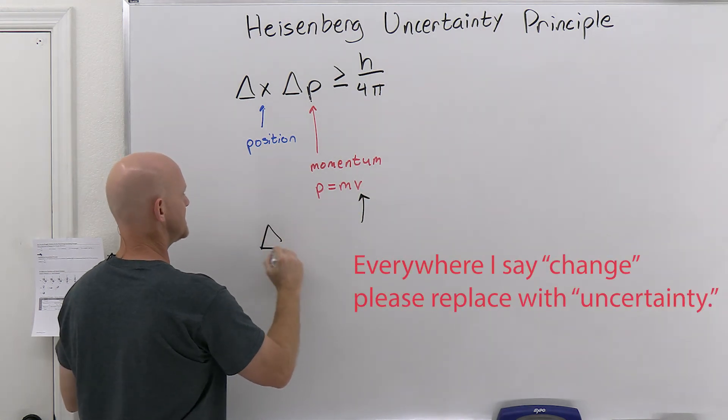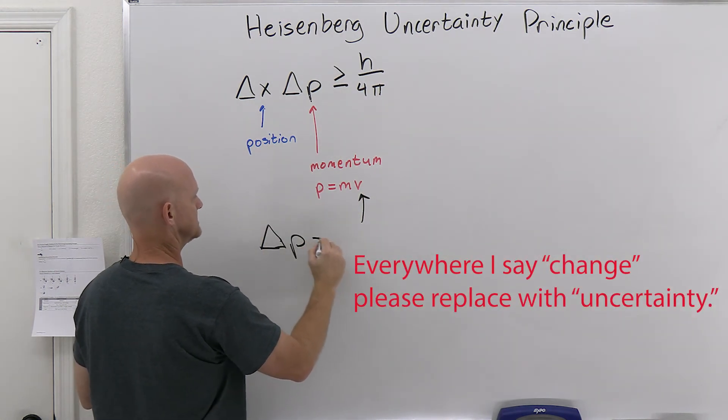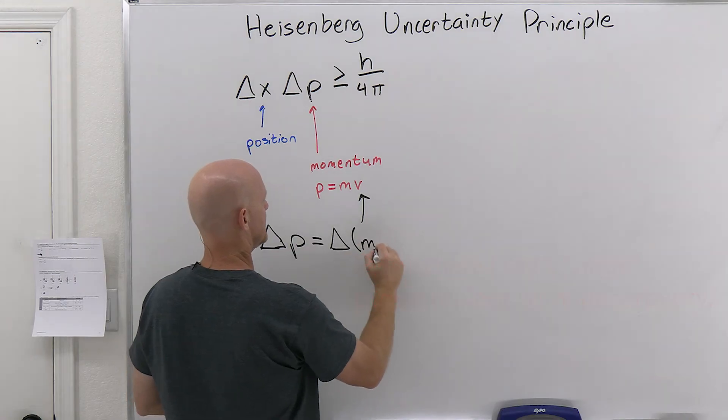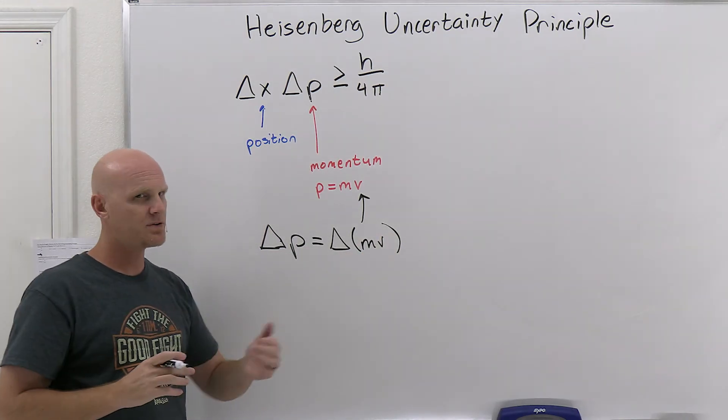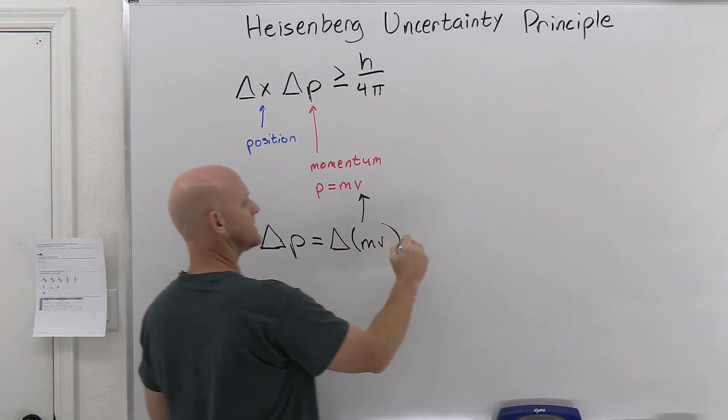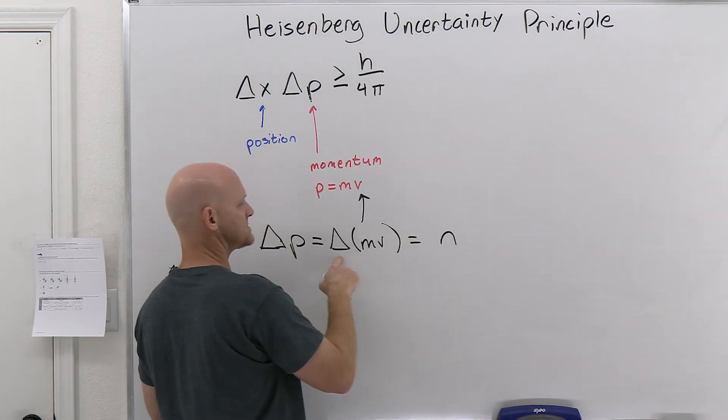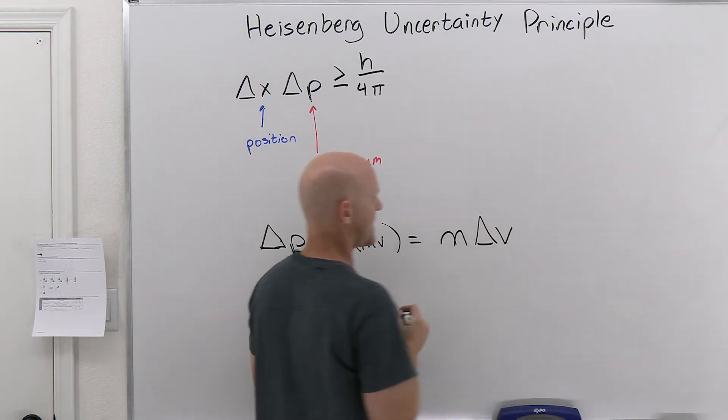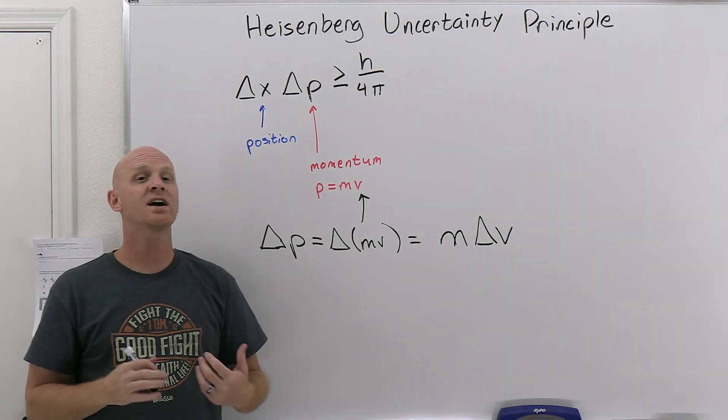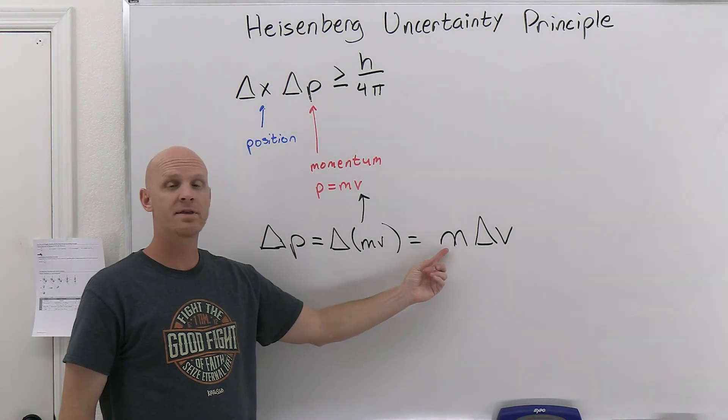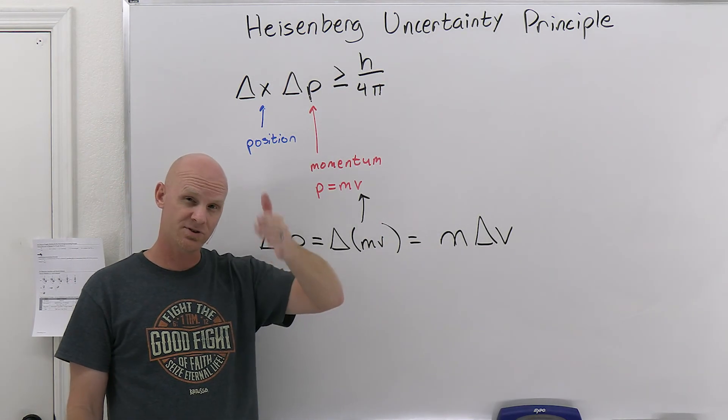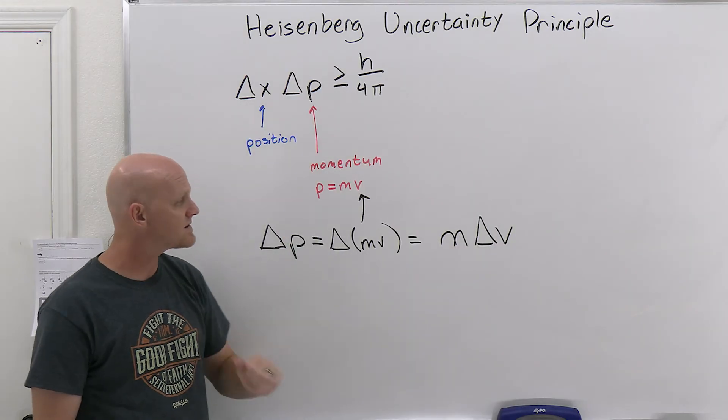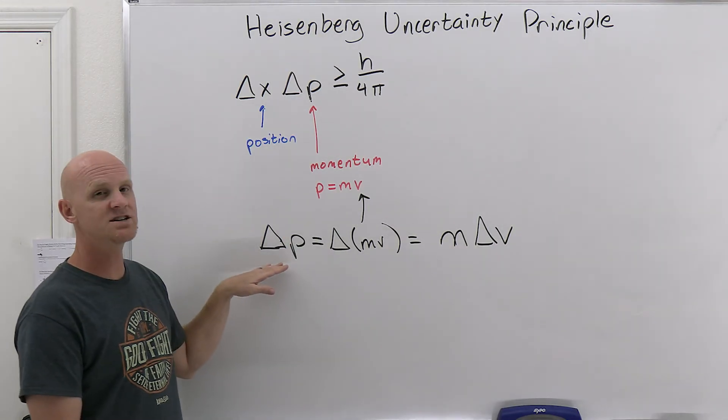And so your change in momentum is equal to the change in MV. Well, again, it's typically not the mass that's changing. And so you can take that mass out of the change part of it and make it mass times the change in velocity. And so sometimes I'll tell you what the change in the velocity is, and you need to multiply it by the mass of the particle you're talking about, which is usually an electron and usually something they have to provide you with. And then you can calculate that change in momentum.